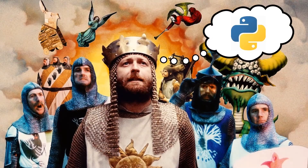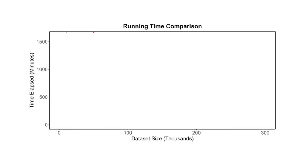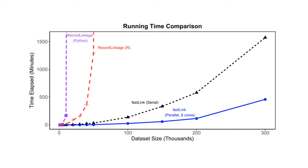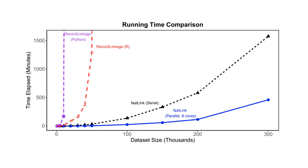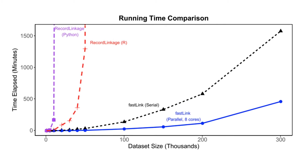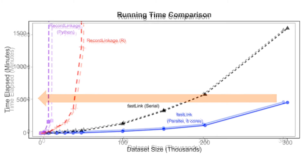Why did we decide to build a new piece of software rather than just use what's already out there? We found a package programmed in R called FastLink that performs comparatively well — it's rigorous, and there's a formal academic paper supporting its methodology. However, it doesn't scale very well. The FastLink paper itself has a useful chart reproduced on this slide showing how long it takes to link and deduplicate records depending on dataset size. We see that even as the fastest option, at 300,000 records it's taking almost 10 hours, so with tens of millions of records that's just not going to be practical at all.